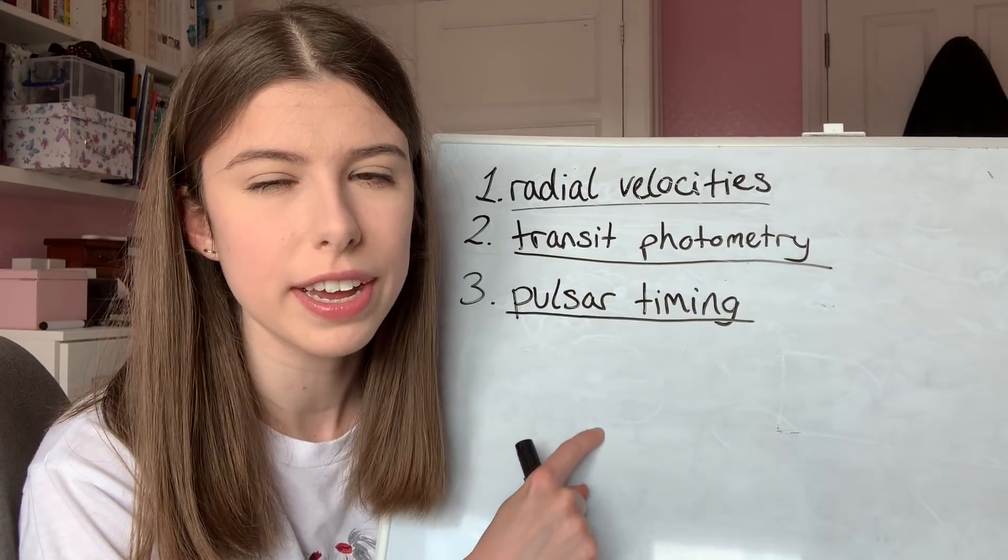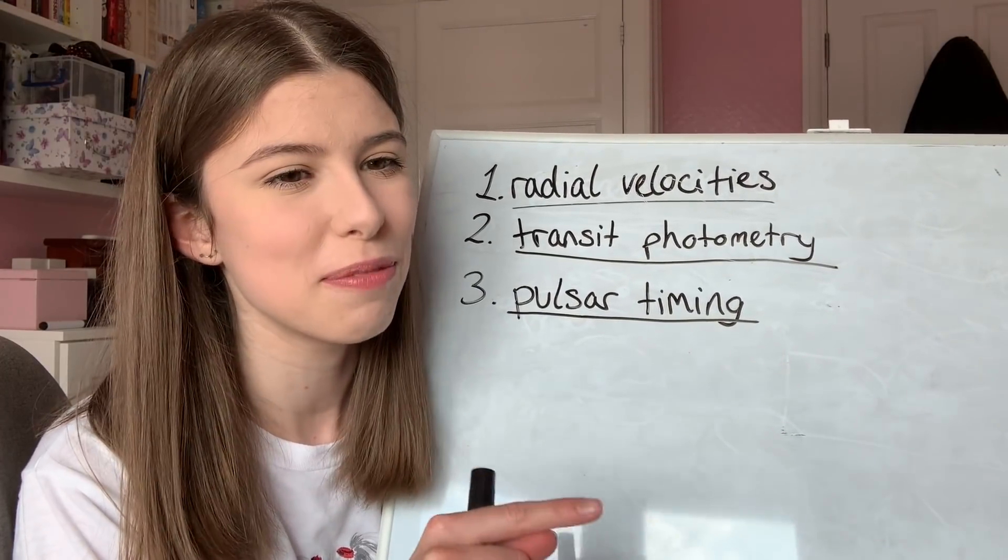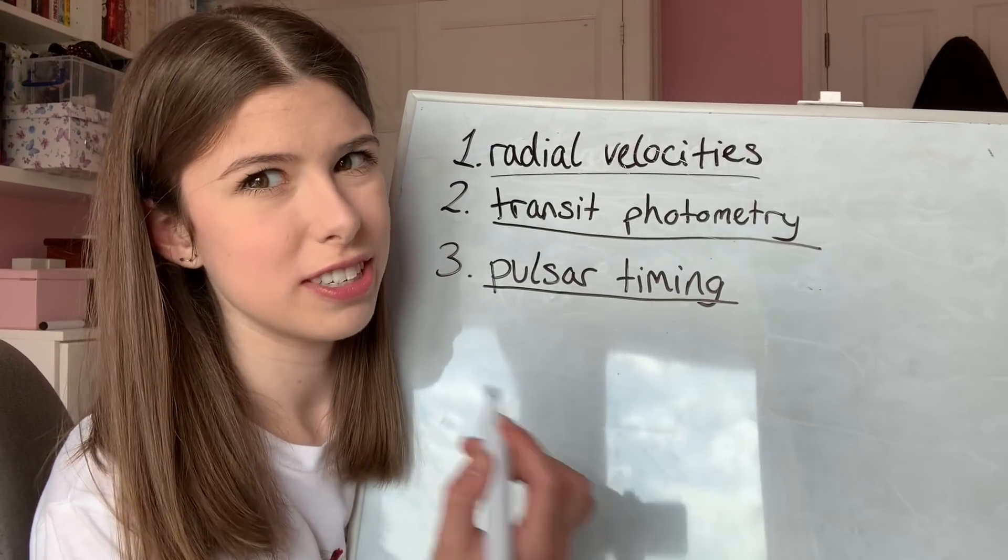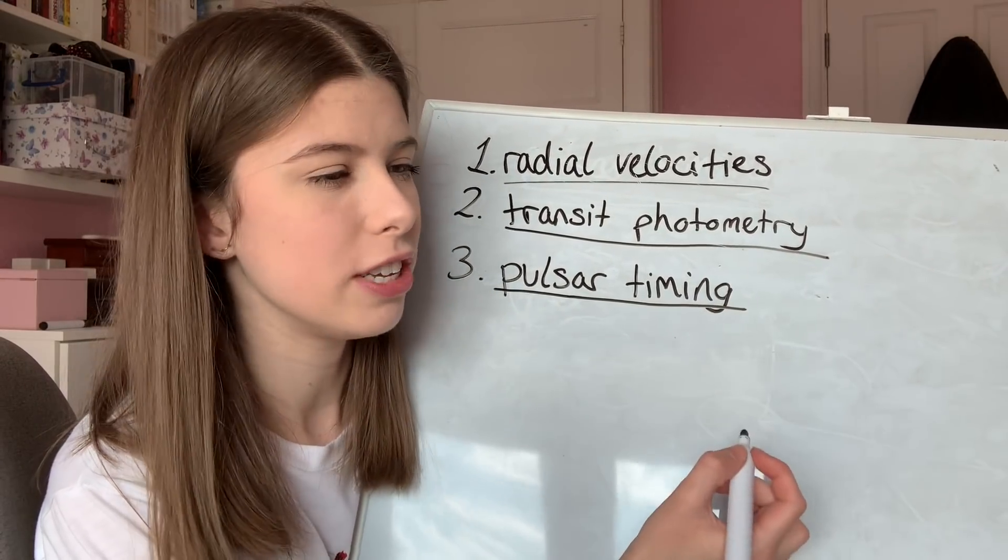And if there are periodic departures from the expected arrival times of these radio waves, we can deduce that the pulsar is moving - it is wobbling around the center of mass of the system because it's got an exoplanet orbiting it. With pulsars, it's the same principle as when a planet is orbiting a star.